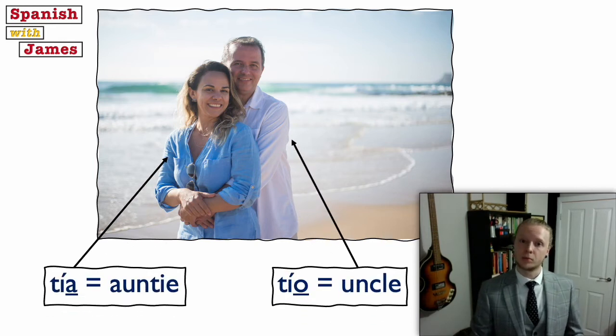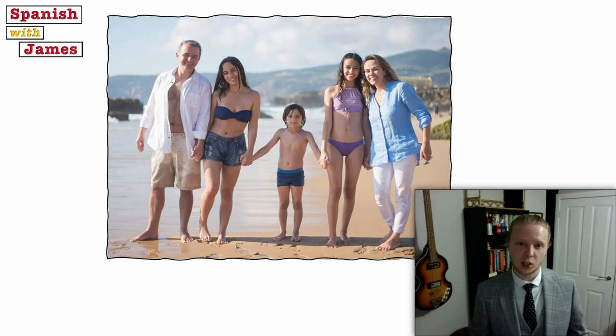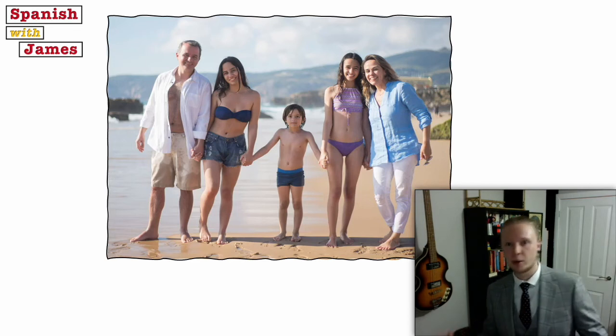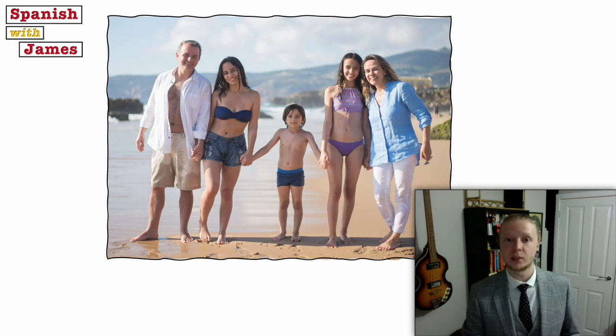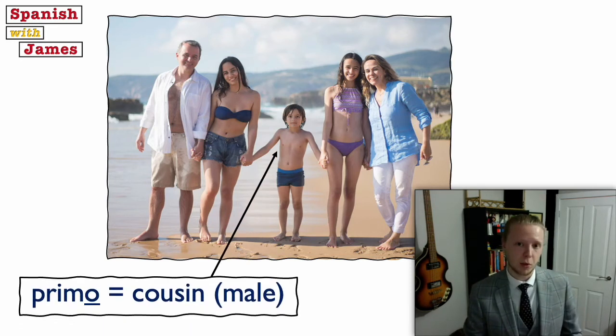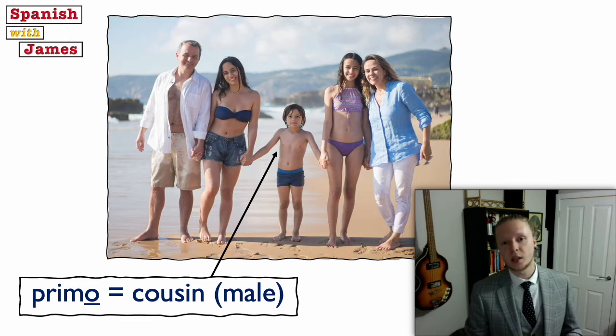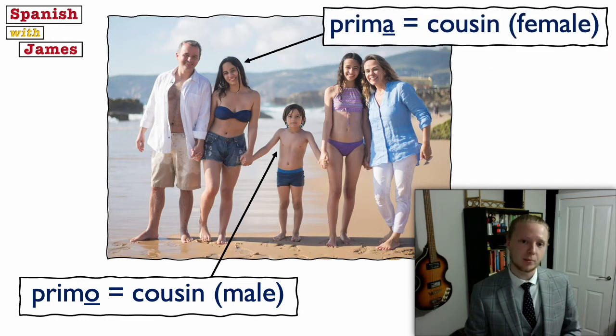Now let's move on to uncles and aunties. In English 'uncle' and 'aunt' have no connection, but in Spanish it's the same word again with O or A ending. Auntie is tía, and uncle is tío. Just O for masculine, A for feminine. It's the same with cousin. In English 'cousin' is gender neutral, but in Spanish the ending tells us: primo is a male cousin, prima is a female cousin.